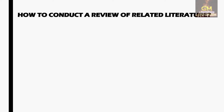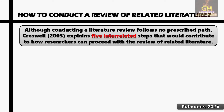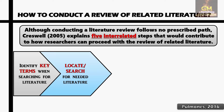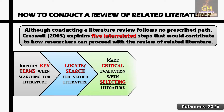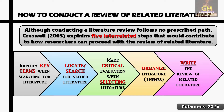Now that we understand the different reasons why we should conduct a review of related literature, we proceed with the next question: how to conduct a review of related literature. Pulmonis in 2016 cites Cresswell in 2005, explaining that although conducting a literature review follows no prescribed path, there are five interrelated steps. First, identifying the key terms when searching for literature; second, locating or searching for the needed literature; third, making critical evaluation when selecting literature; fourth, organizing the literature according to themes; and lastly, writing the review of related literature itself.